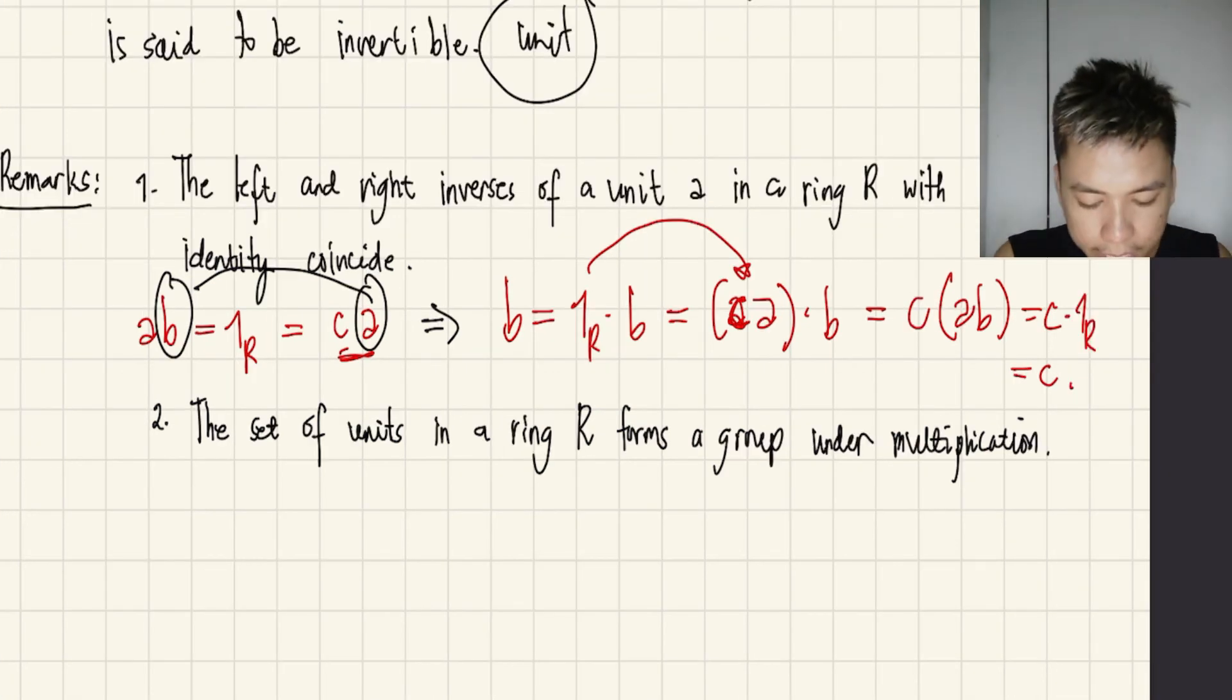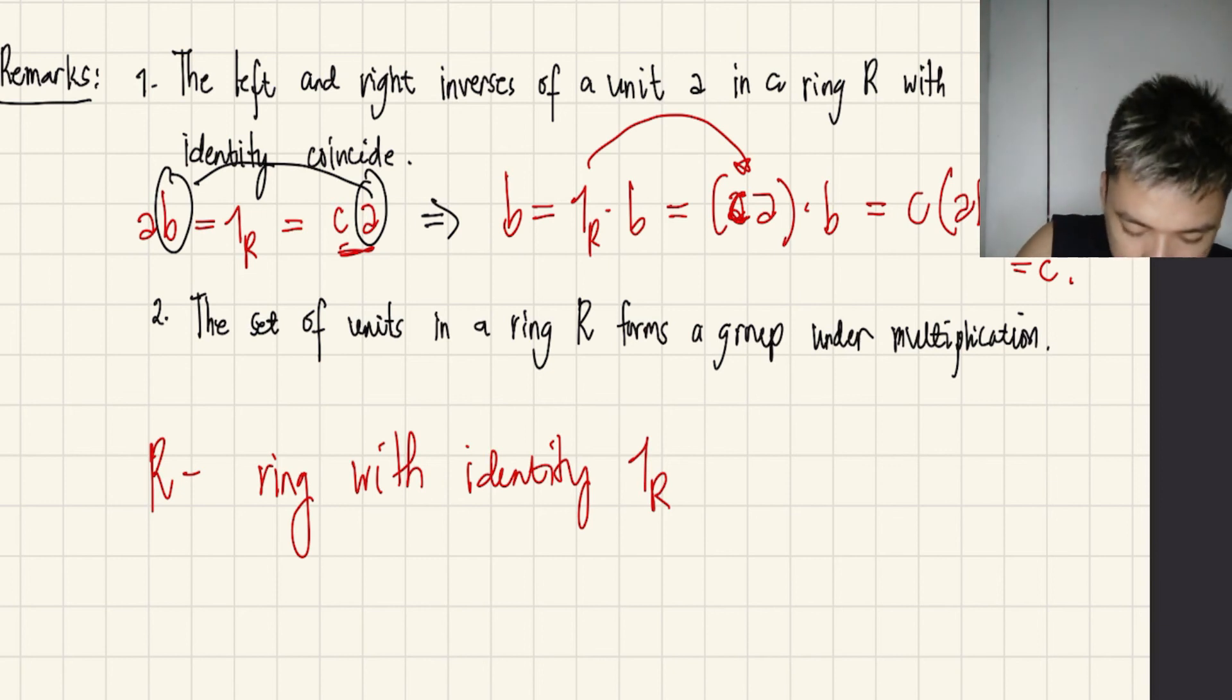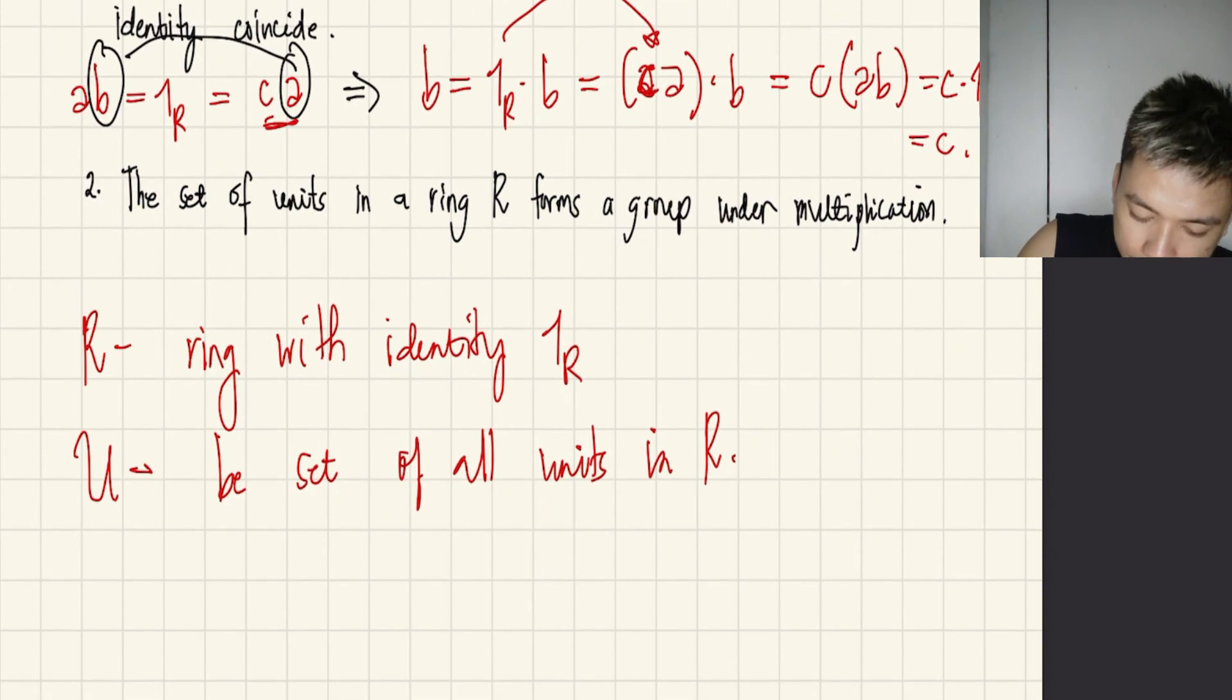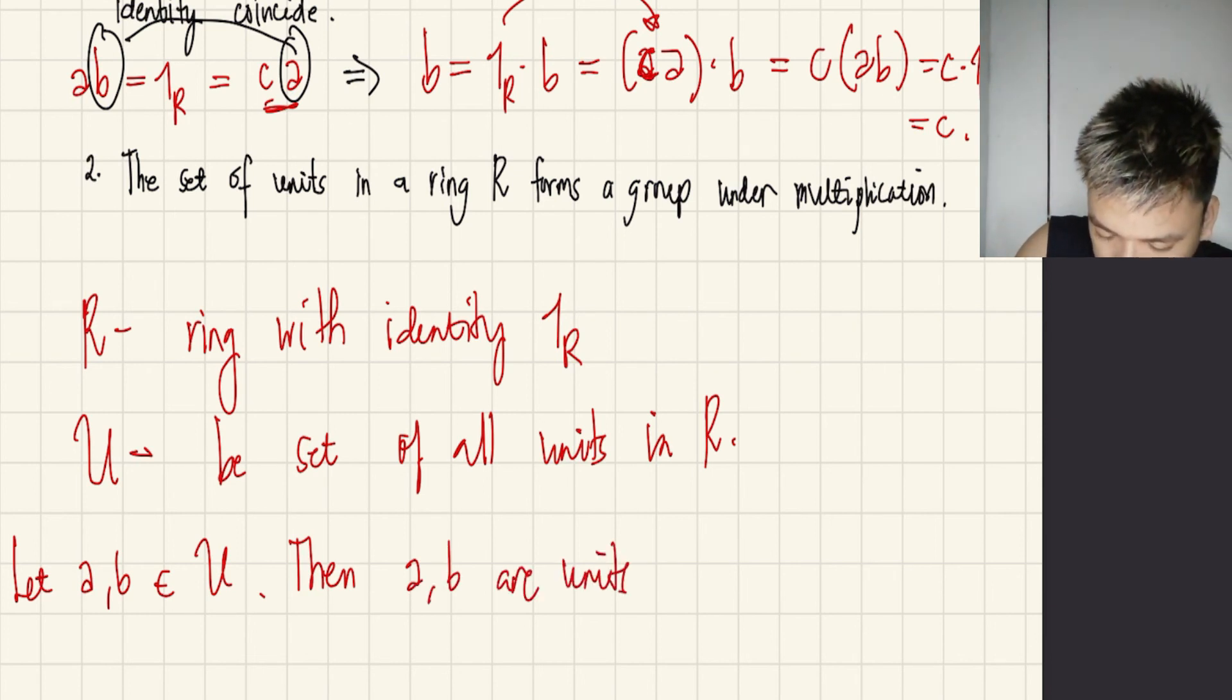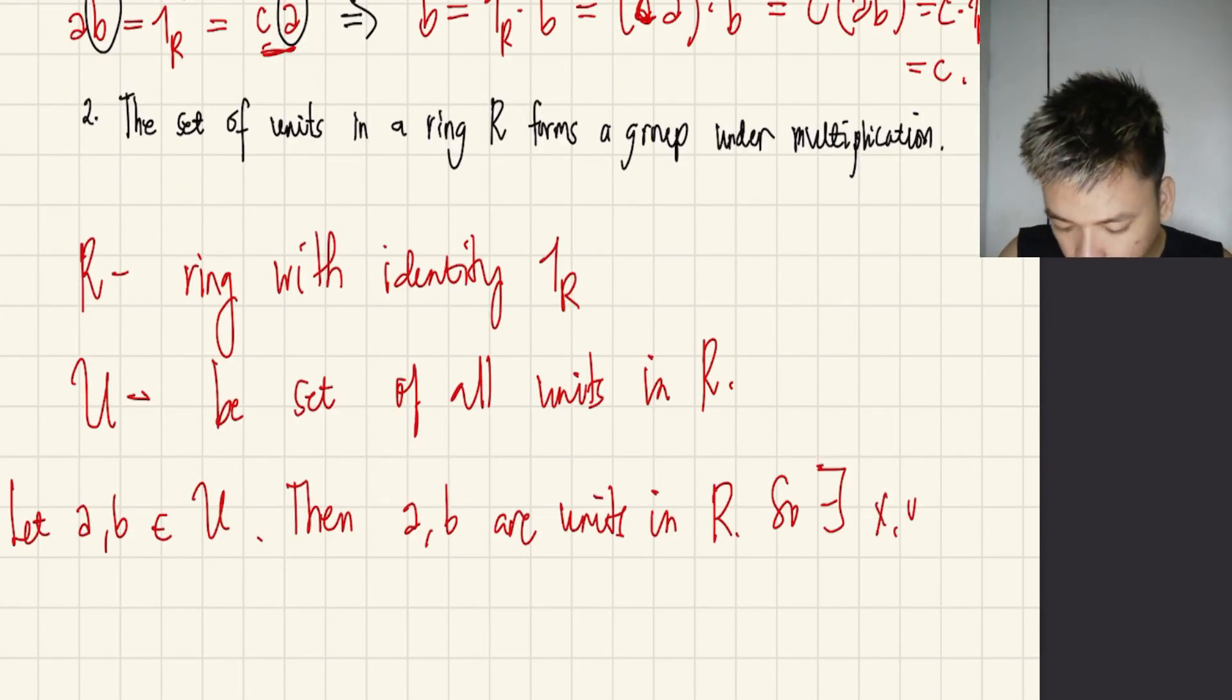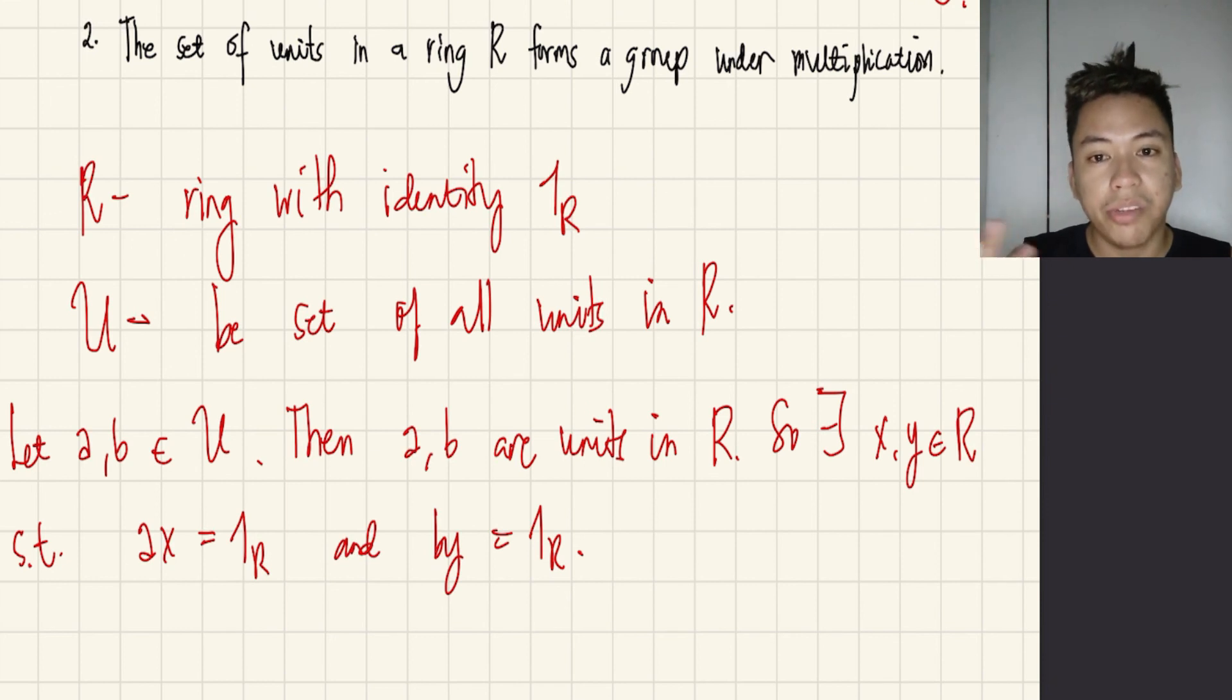So the second remark says that the set of units in a ring R forms a group under multiplication. Let's do this. Let R be a ring with identity, so it has a unit. And let U be the set of all units in R. So let A, B be in U. This means that A and B are units in R because they are elements in U. So there exists X, Y in R such that AX equals 1R and BY equals 1R.